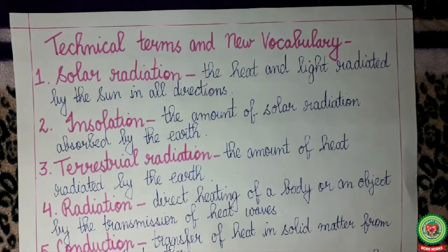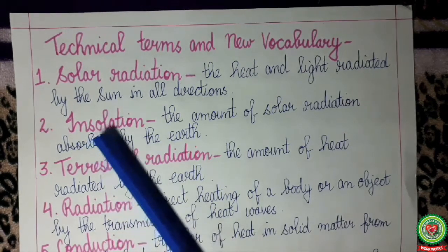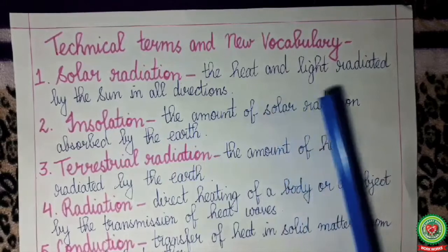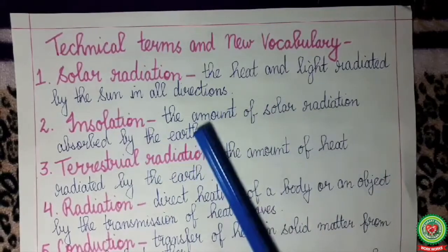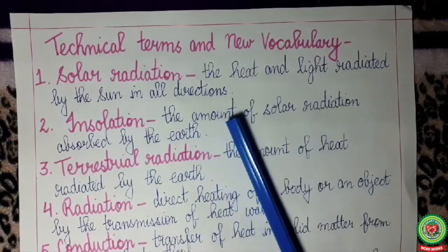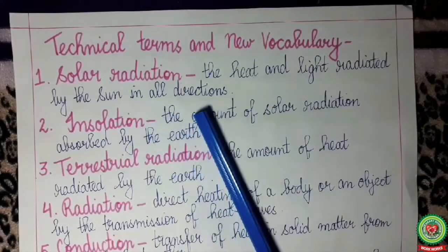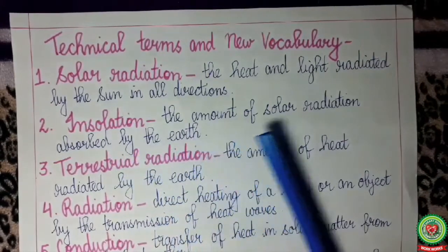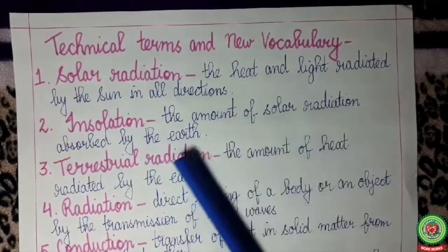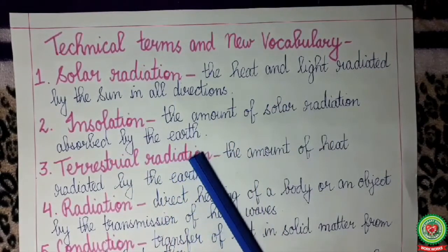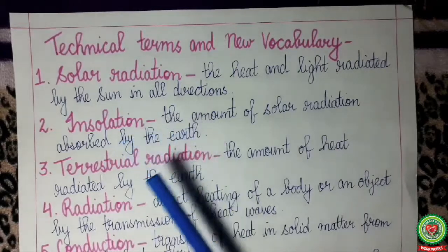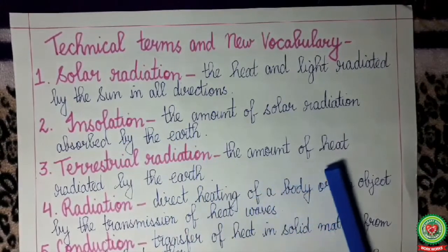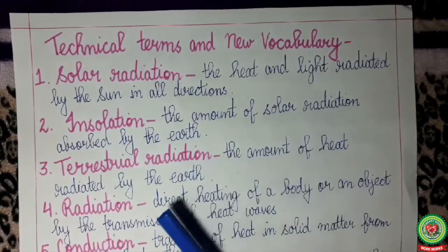Now let us go through the technical terms for today's topic. Number one: solar radiation — the heat and light radiated by the sun in all directions is called solar radiation. Insolation — the amount of solar radiation absorbed by the earth is termed as insolation. Terrestrial radiation — the amount of heat radiated by the earth.